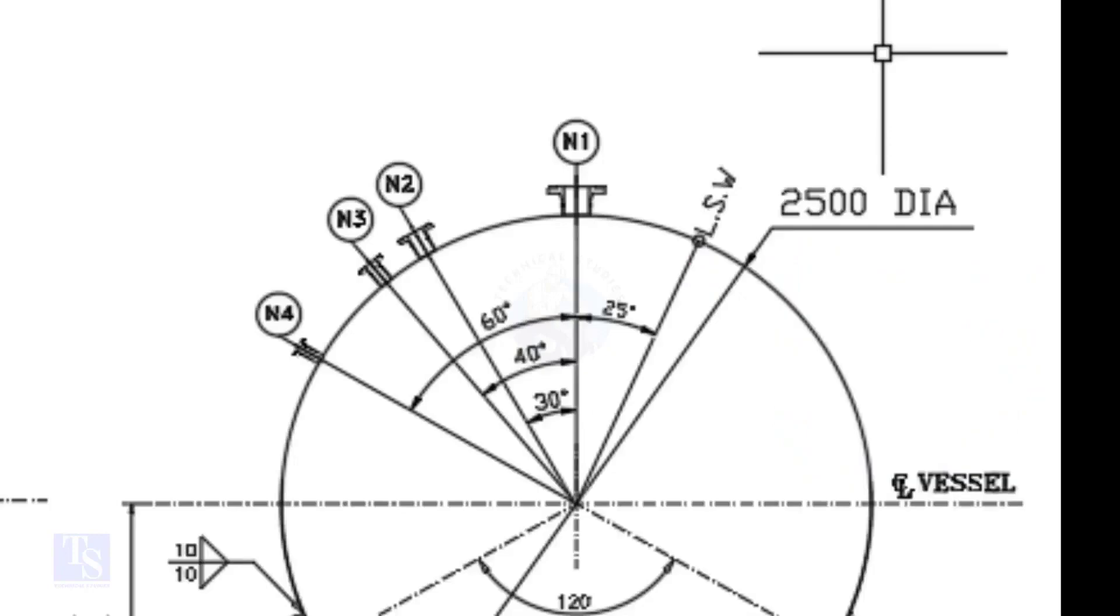We are going to mark the centers of nozzles N1, N2, N3, and N4. N1 nozzle comes on 0 degree, N2 on 30 degree, N3 on 40 degree, and N4 on 60 degree.